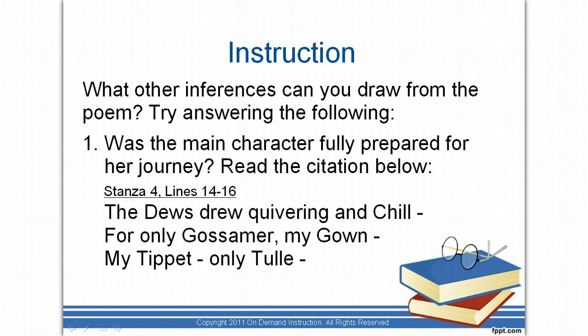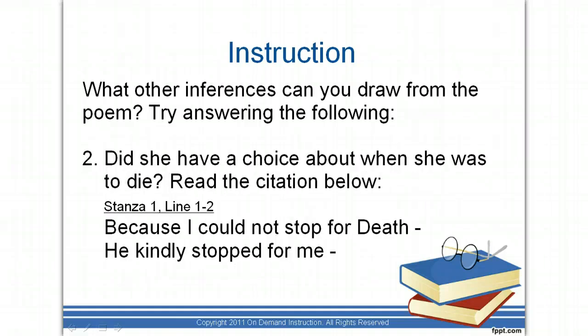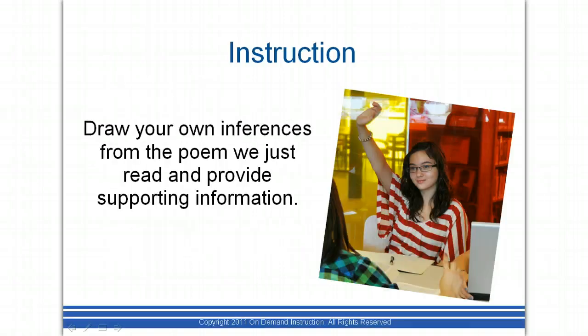What other inferences can you draw from the poem you just read? Do you think the main character was fully prepared for her journey toward death and eternal life? Read lines 14-16 of the fourth stanza to find out. Do you think she had a choice about when she was to die? Read the first two lines of the poem for the answer. Try to draw more inferences from the poem and provide supporting evidence.